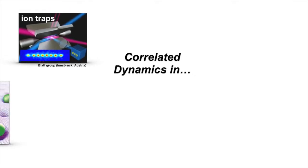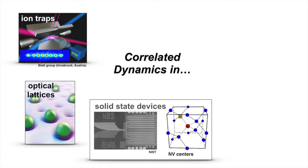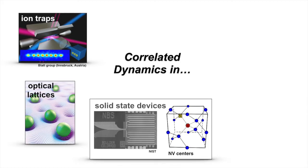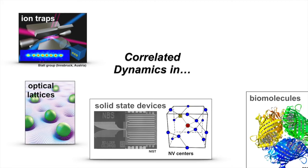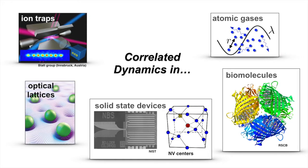Such correlations arise naturally in many quantum systems, for instance in physical platforms used for quantum information processing, such as ion traps, optical lattices or solid-state devices. But they can also occur and play a central role in natural processes, such as coherent energy transfer in biomolecules or sub- and super-radiant dynamics in atomic ensembles.